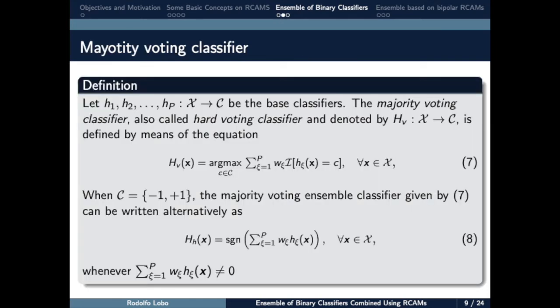Now, what is a majority voting classifier? Let be H1 to Hp base classifiers. The majority voting classifier, also called the hard voting classifier, is given by equation 7, where I is the indicator function, which takes the value 1 when the base classifier takes the value C, one correct class value, or 0 otherwise.